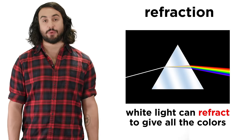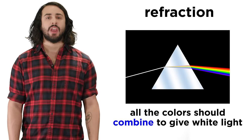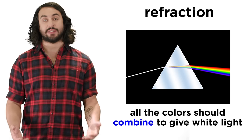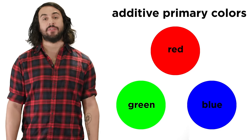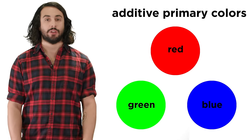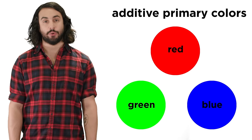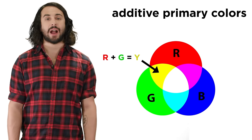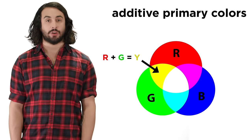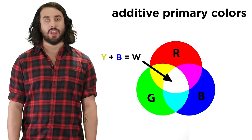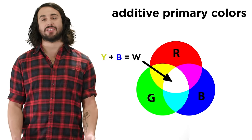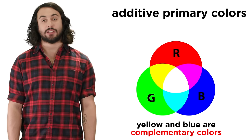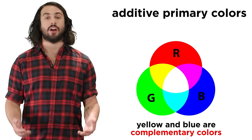Since white light can be refracted to separate all the colors, it should follow that all the colors can be combined to get white light. This is true of the additive primary colors, which are red, green, and blue. If we pass light through a red filter and combine it with light through a green filter, we get yellow light. If we combine this with light passed through a blue filter, we get white light, which makes yellow the complementary color of blue.